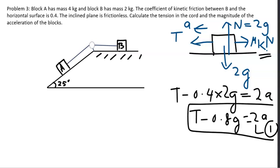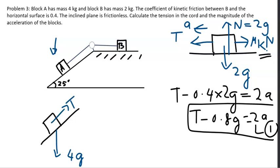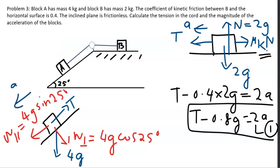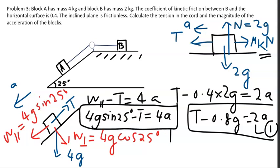For object A on the frictionless inclined plane: weight is 4g, tension pulls it up the plane. The component of weight perpendicular to the plane is 4g cosine 25°, and the parallel component is 4g sine 25°. Acceleration is down the plane. Applying Newton's second law along the plane: the parallel weight component minus tension equals 4a. This gives Equation 2.